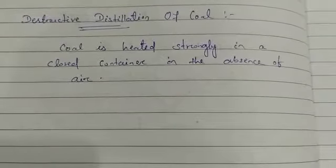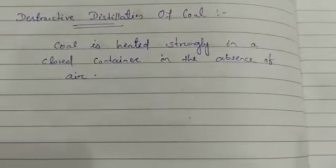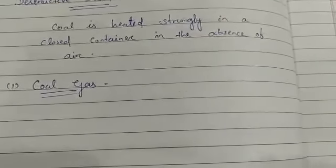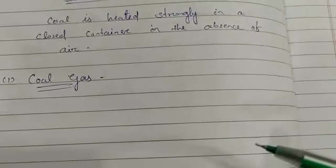Coal gas is the gas released during the destructive distillation of coal. It is a mixture of methane, hydrogen, and carbon monoxide, which makes it an excellent fuel. It is used in industries located near coal processing plants. Initially it was used to light street lamps in London in 1810. These days it is mainly used as a source of heat.